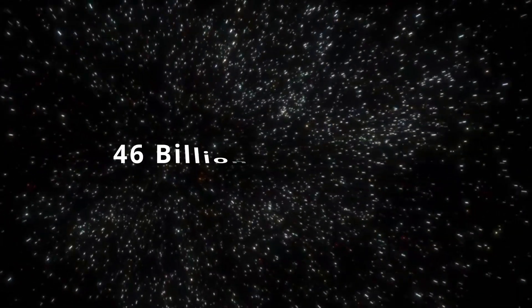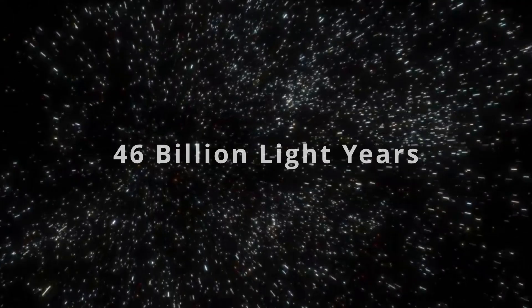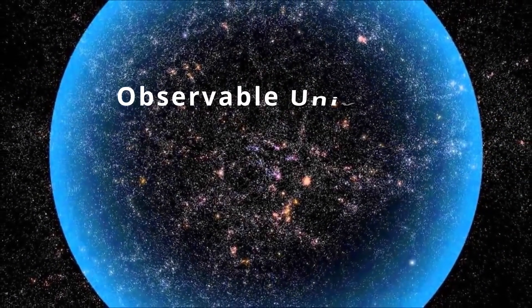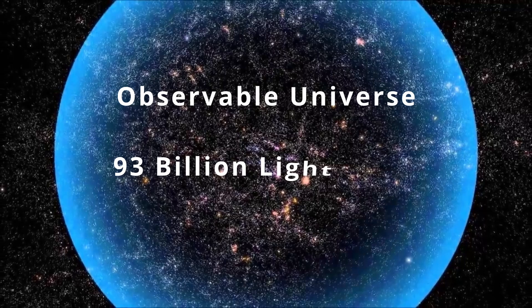So although the light itself might have only traveled for 13.8 billion years, the distance from us to the point it came from is at present 46 billion light years away. This would make the diameter of the observable universe about 93 billion light years.